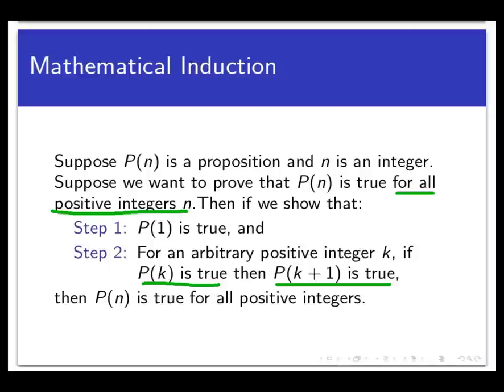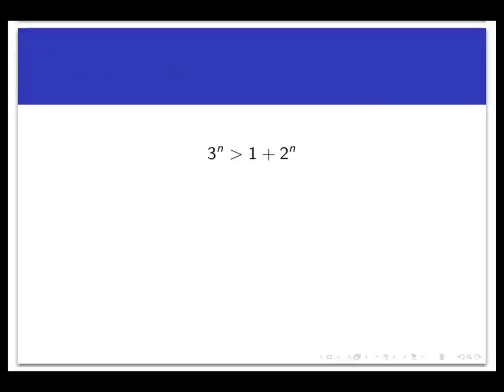Induction is very powerful but it does have limits to its usefulness as stated. So let's explore this predicate: 3^n > 1 + 2^n, where only the 2 is raised to the nth power. That's a predicate and it may be true for some natural numbers and false for others. We don't know unless we play with it.